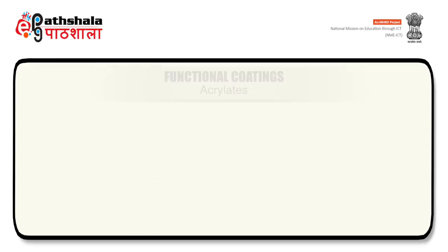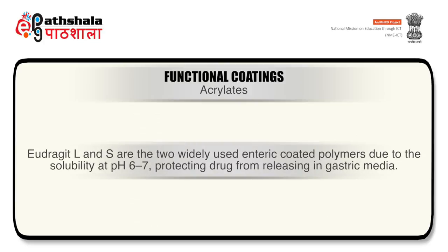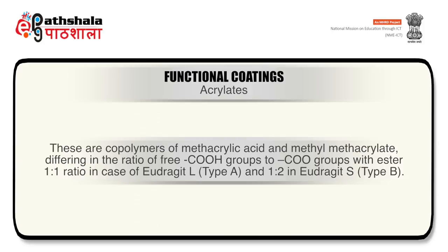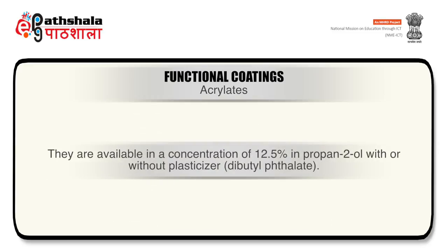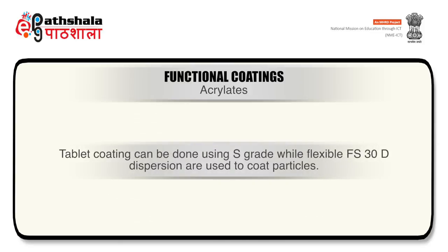A sealer subcoat should be applied to CAP films as they are permeable to certain ionic matter like ammonium chloride and potassium iodide. Regarding acrylates: Eudragit L and S are the two widely used enteric coating polymers due to their solubility at pH 6 to 7, protecting drug from releasing in gastric media. These are co-polymers of methacrylic acid and methyl methacrylate, differing in the ratio of free carboxylic group to carboxylic acid ester group — 1:1 for Eudragit L type A and 1:2 for Eudragit S type B. Eudragit S and FS solubilize at pH greater than 7; S grade is used for tablet coating while flexible FS30D dispersion is used to coat particles.